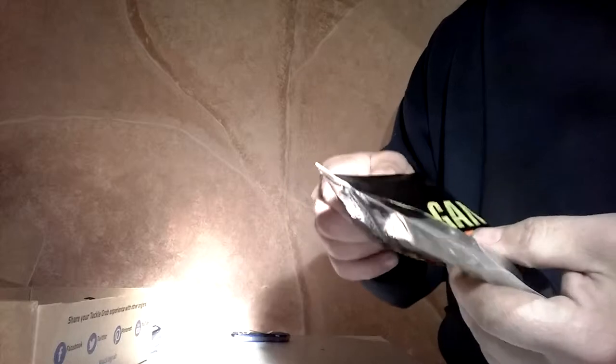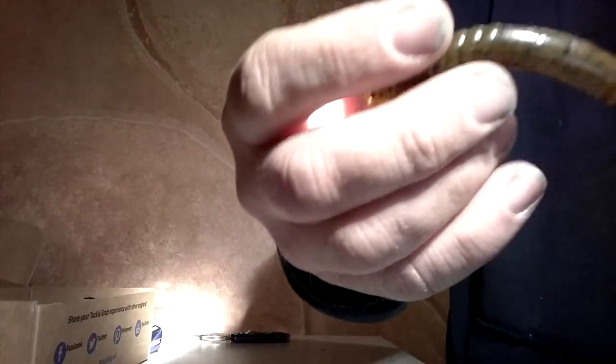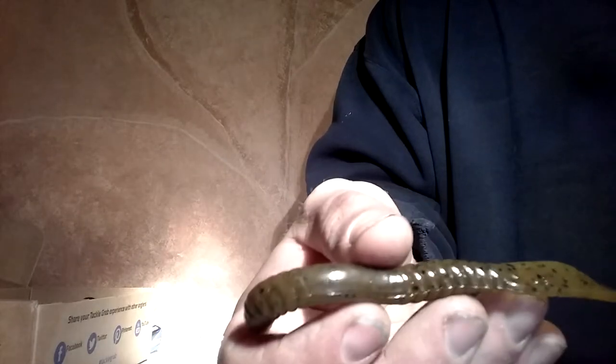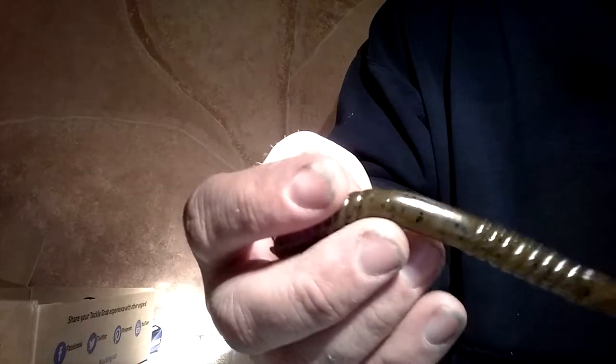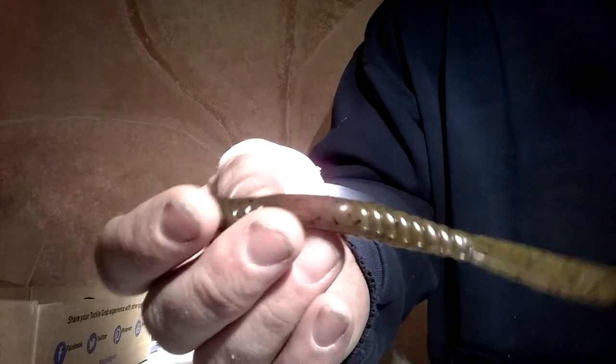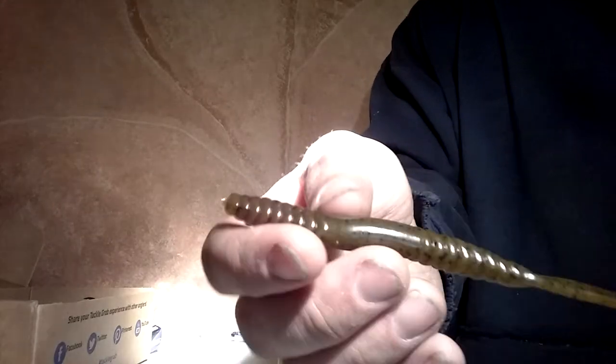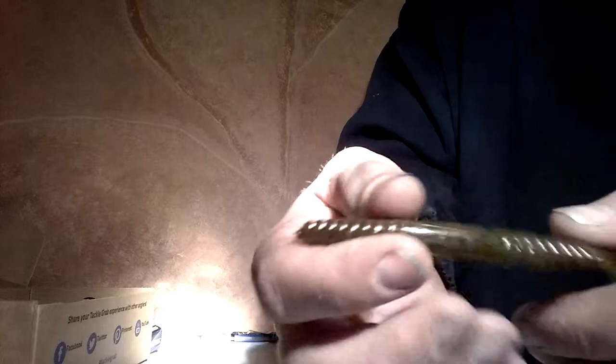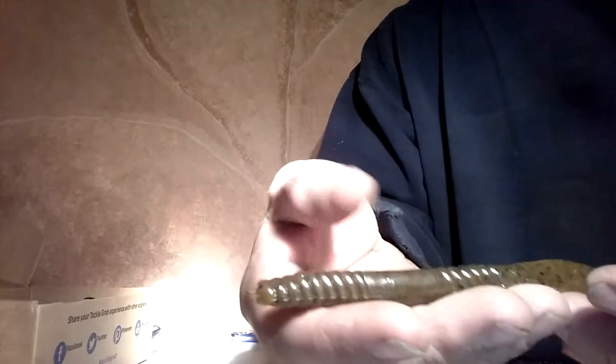Next out is Gambler, seven inch ribbon tail, green pumpkin with black flakes. Very saturated in garlic scent. Can't go wrong. For some reason the bass love that garlic. I don't know what it is. A lot of people are turned off by the garlic but for some reason the bass are really attracted to that. It's a seven inch ribbon tail, retails for $2.35 if I did not mention that earlier. Very nice bait, very pliable. It lasts you for a while. I love ribbon tails. I'm starting to use more and more soft plastics, especially the ribbon tails like this. I have really good success on these.